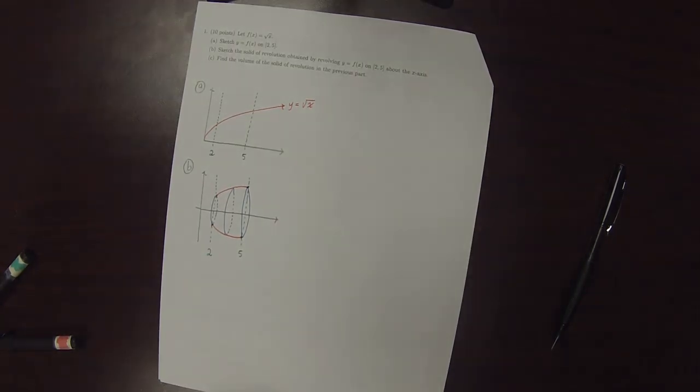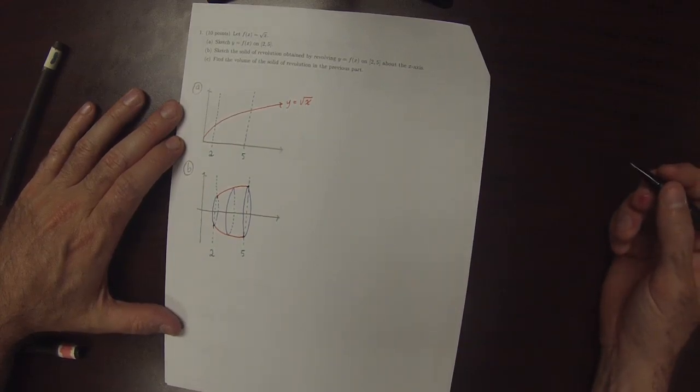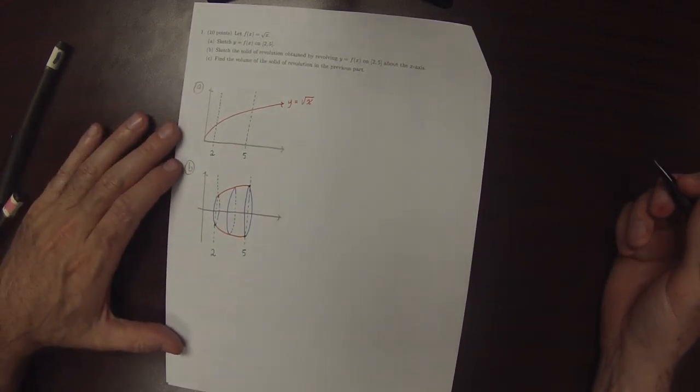So it's this solid, bowl-shaped object. Now find the volume of the solid of revolution.